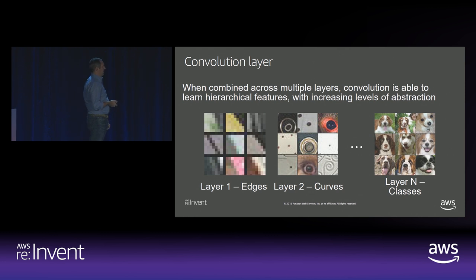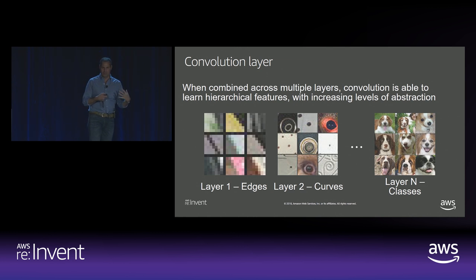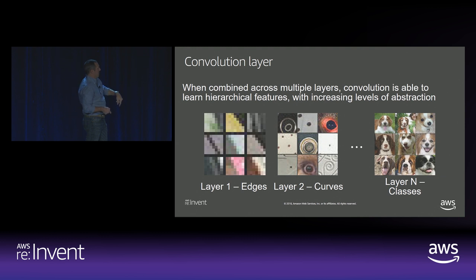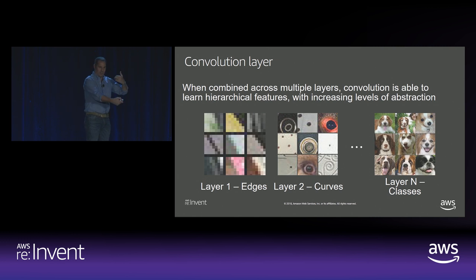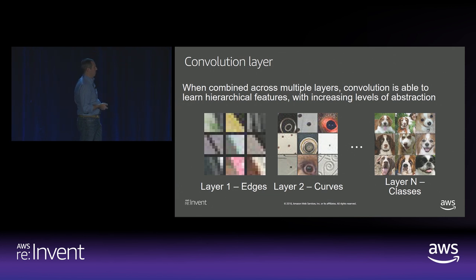There's a famous paper that explored what each layer was actually seeing in convolutional layers. In the beginning it looks like it's finding mostly edges and some colors. In the second layer it's finding curves. And in the deep layer — stacking all these filters up — it's actually identifying dogs. You can get very rich detail from these filters.